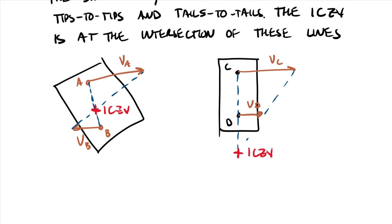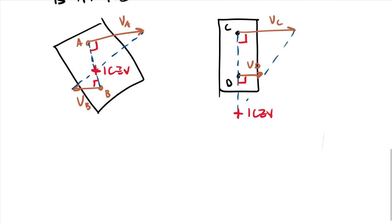And so this also comes to show that we can have ICZVs that are either on the body or off the body, depending on the orientation of those velocity vectors. And noting in all these cases, the velocity is perpendicular to this line that we use to find ICZVs.